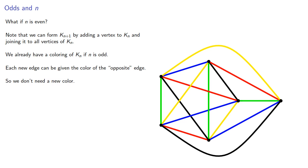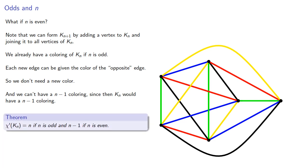And we can't have an n minus 1 coloring, since then Kn would have an n minus 1 coloring. And this proves our theorem that the edge chromatic number is n if n is odd, and n minus 1 if n is even.